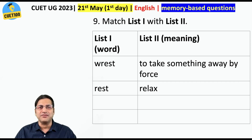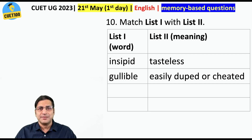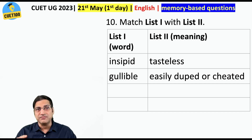'Wrest' means to take something away by force, and 'rest' means to relax. Similarly, one of the words was 'insipid,' meaning tasteless — in cricket we also say 'what an insipid, one-sided match.' 'Gullible' means easily duped or cheated.